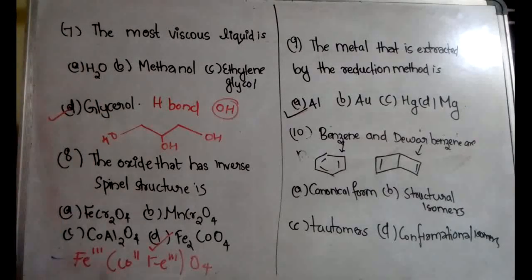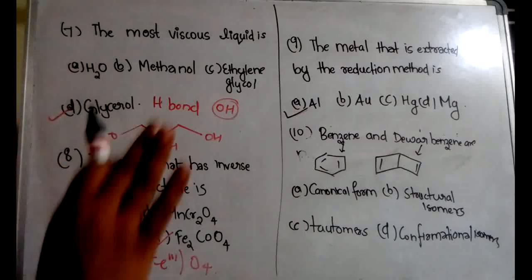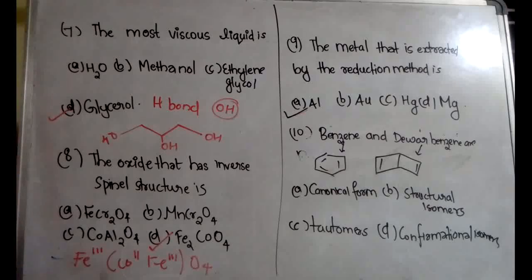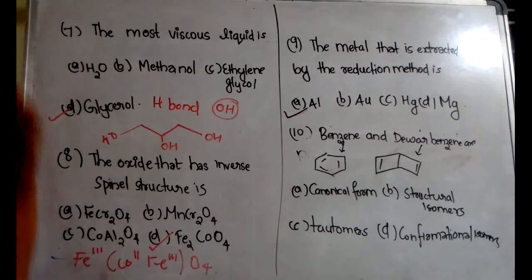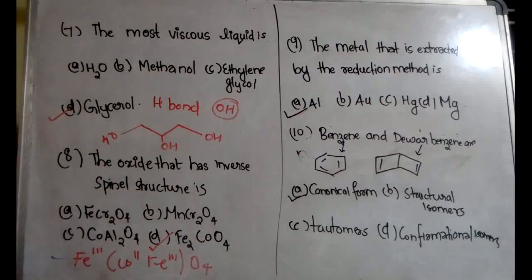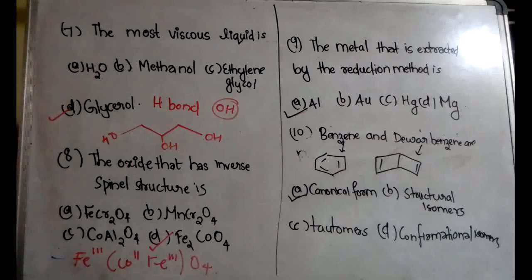The tenth question: benzene and Dewar benzene are given and we must find their relationship. They are canonical forms — not structural isomers, conformational isomers, or tautomers. Benzene has many canonical forms, which can be discussed in a full video. Please keep in mind that benzene and Dewar benzene are canonical forms.